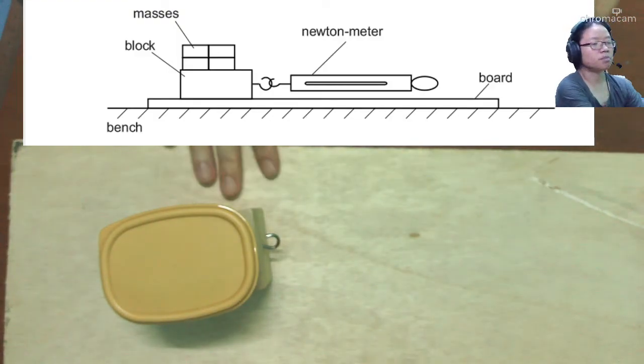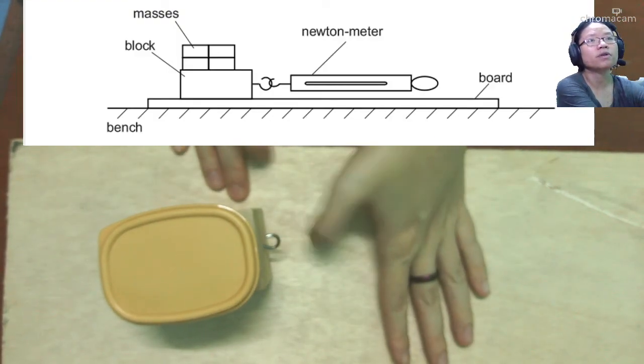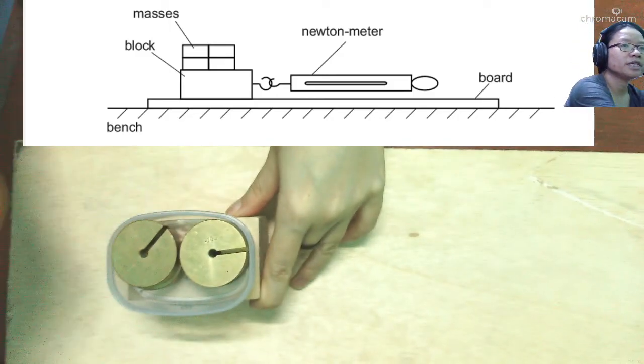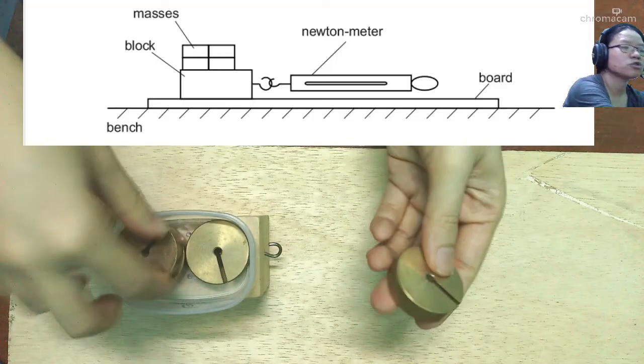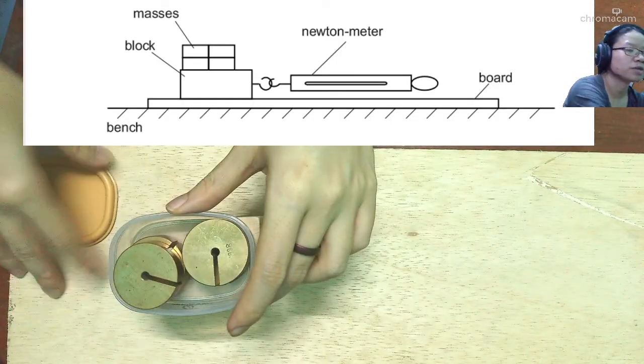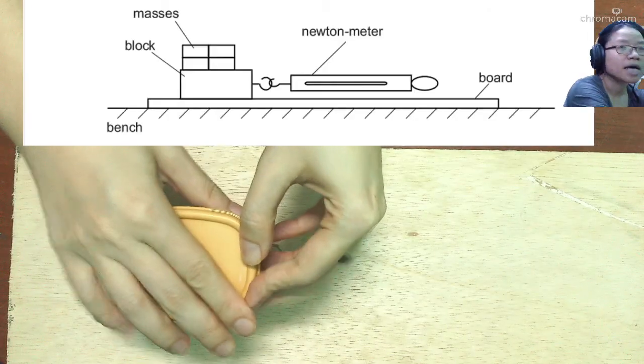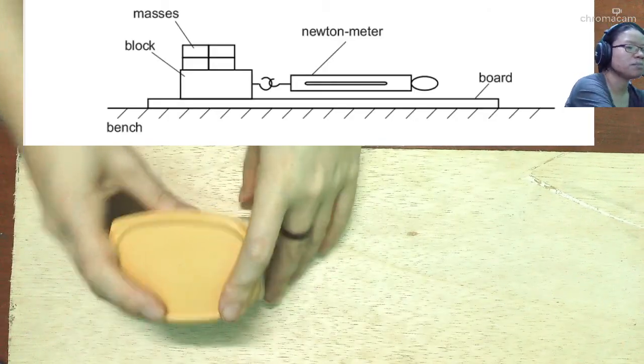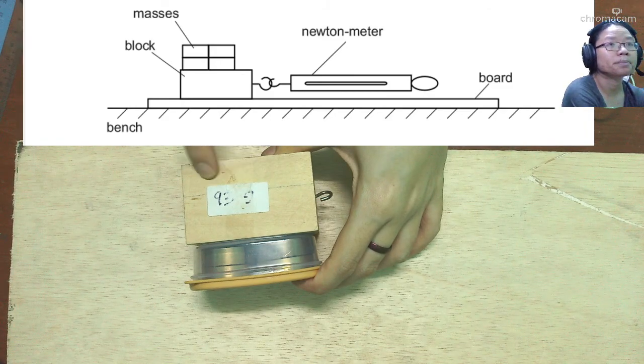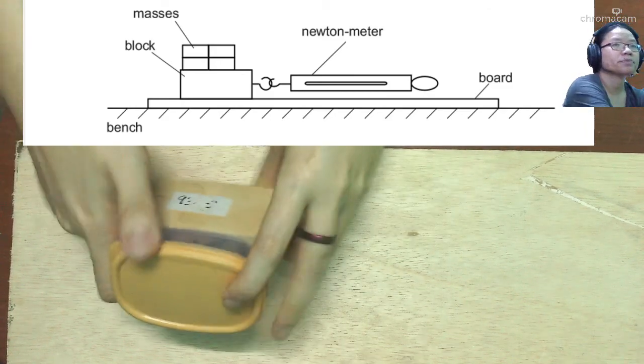In this question, there's a board. This is the board. And then this is the block. The block already has four 100 grams, so together 400 grams slotted mass inside. And the mass of the block and the Tupperware alone is 93 grams.